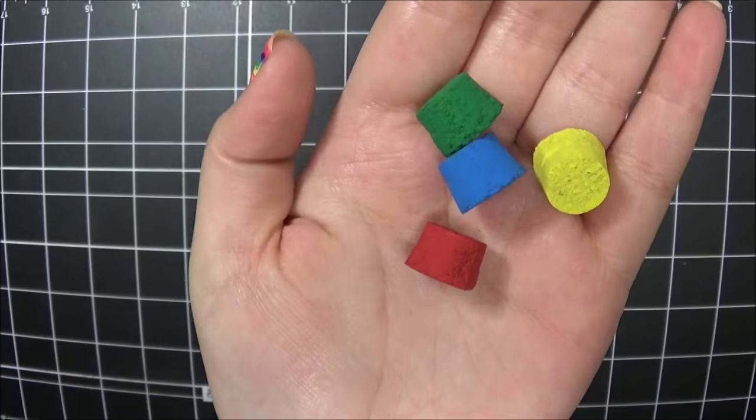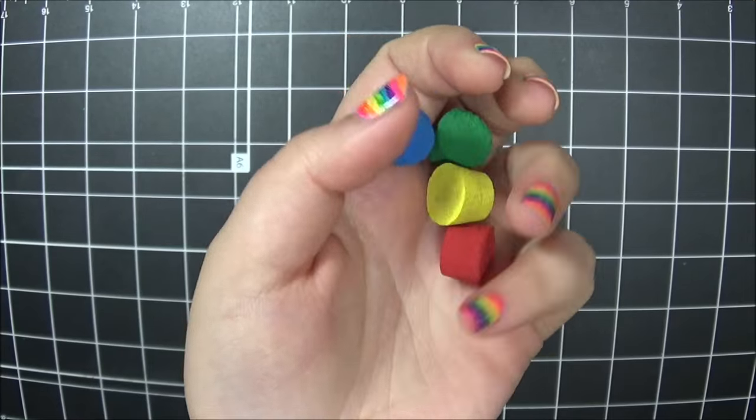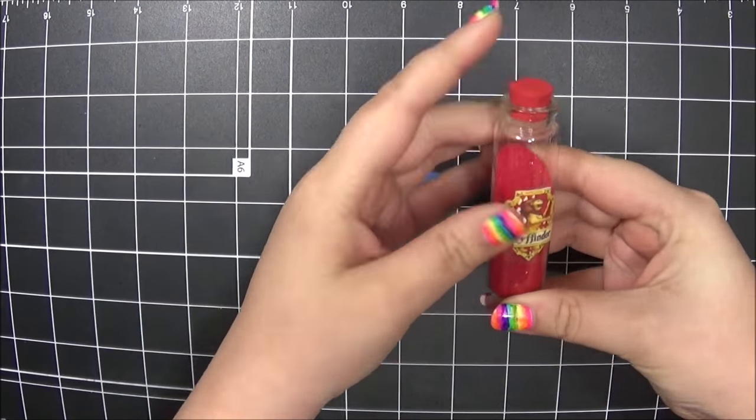Anyways, I painted each of the corks in each of the colors and once they dried, I popped them back onto the bottles.